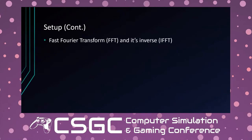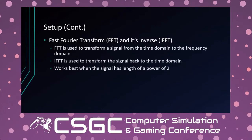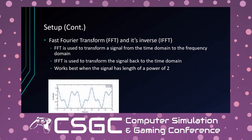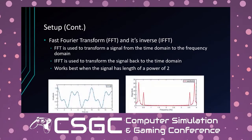The Fast Fourier Transform (FFT) transforms a signal from the time domain to the frequency domain, and the Inverse FFT (IFFT) converts it back. This works best when the signal length is a power of two. When we compute the impulse response it's in the time domain — amplitude over time on the left, frequency domain on the right. We utilize the circular convolution theorem to perform convolution in frequency space.